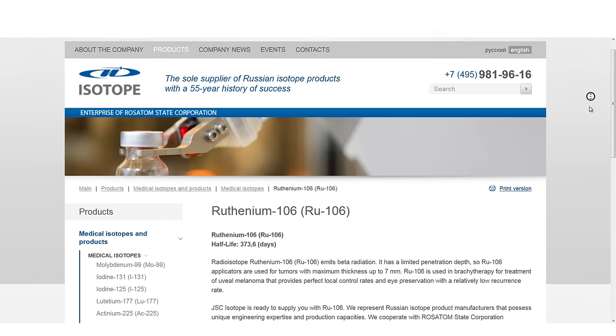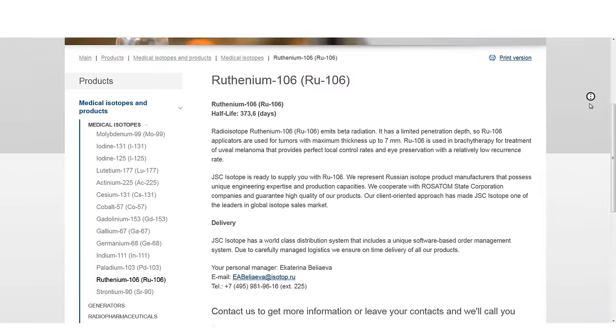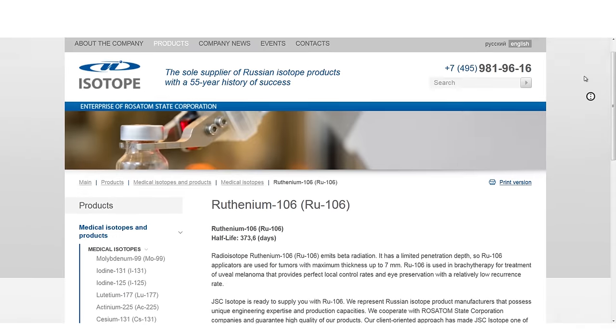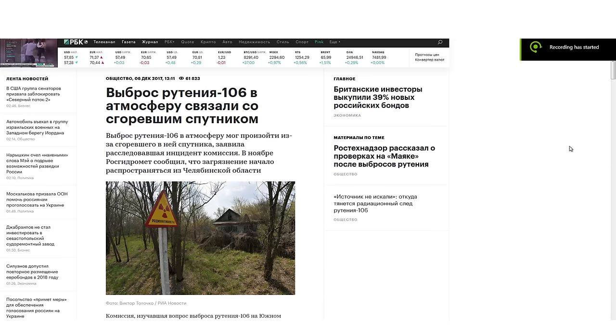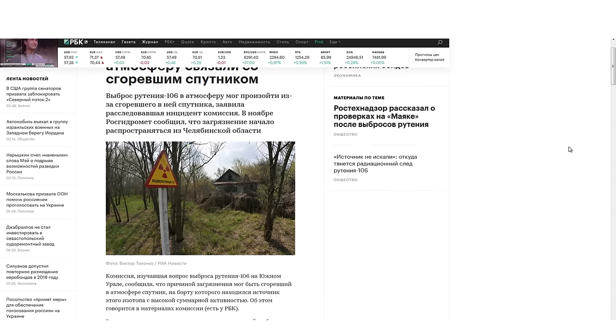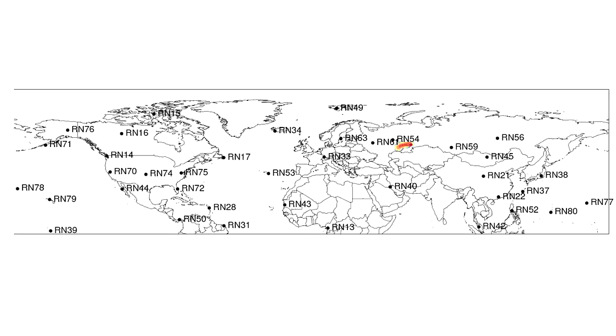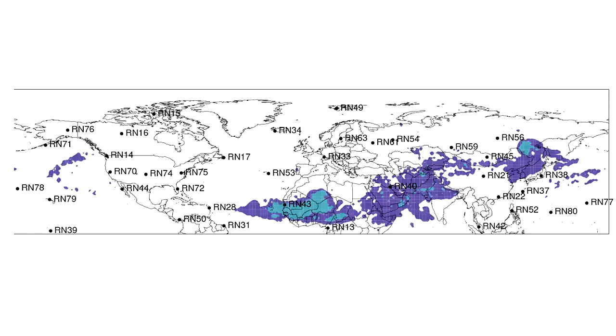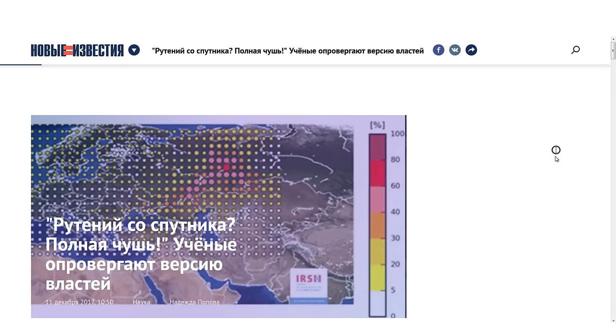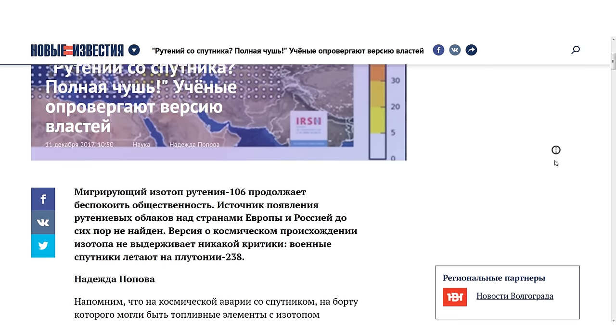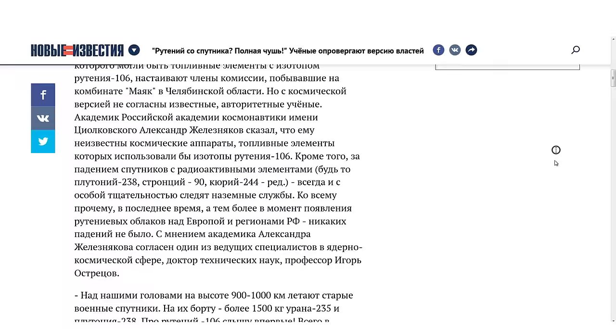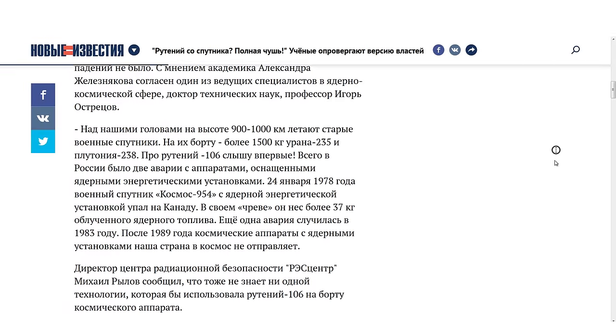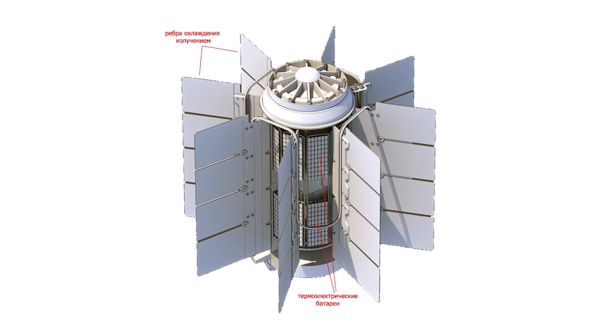Russian Rosatom also produces this isotope. In the end of 2017, there was made a lot of noise in the mass media about supposed ruthenium-106 contamination cloud above Europe. At first, Mayak nuclear plant in Ural mountains was under a cloud of suspicion, but Russian authorities denied their involvement and officially claimed that the contamination was caused by a satellite that burned down in the atmosphere.